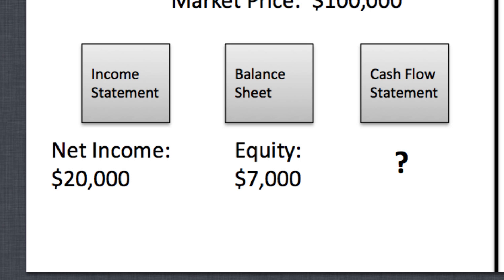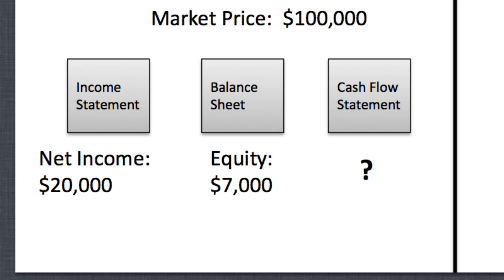Nancy's net income was twenty thousand dollars — that represents her profit for one year. The balance sheet represents the equity. If Nancy ended her business today, fired her employee, sold everything, and paid off all her debts, what would be left is seven thousand dollars — that's the equity. The margin of safety is the difference between the equity and the market price. If you buy for a hundred thousand and have to liquidate immediately, you'd only recover seven thousand dollars.